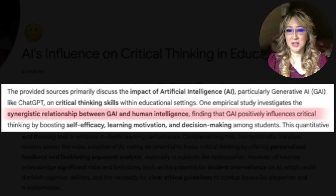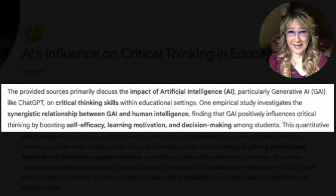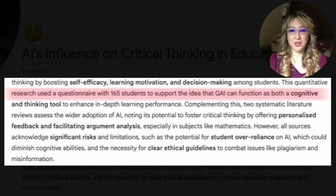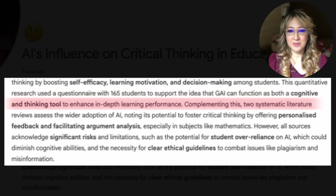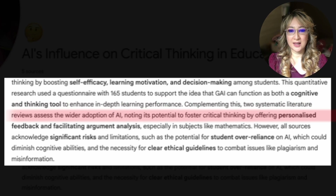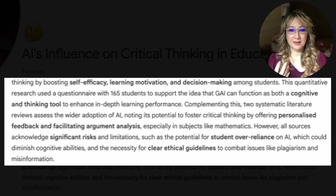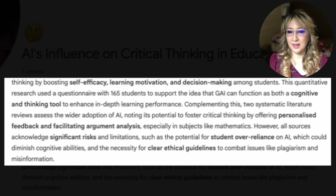This is the summary that Notebook LM generated based on my five sources, which I found using ConsenSys. The provided sources primarily discuss the impact of AI — particularly generative AI like ChatGPT — on critical thinking within educational settings. One empirical study finds that GenAI positively influences critical thinking by boosting self-efficacy, learning motivation, and decision-making among students. Two systematic literature reviews also note AI's potential to foster critical thinking through personalized feedback and facilitating argument analysis, especially in mathematics.